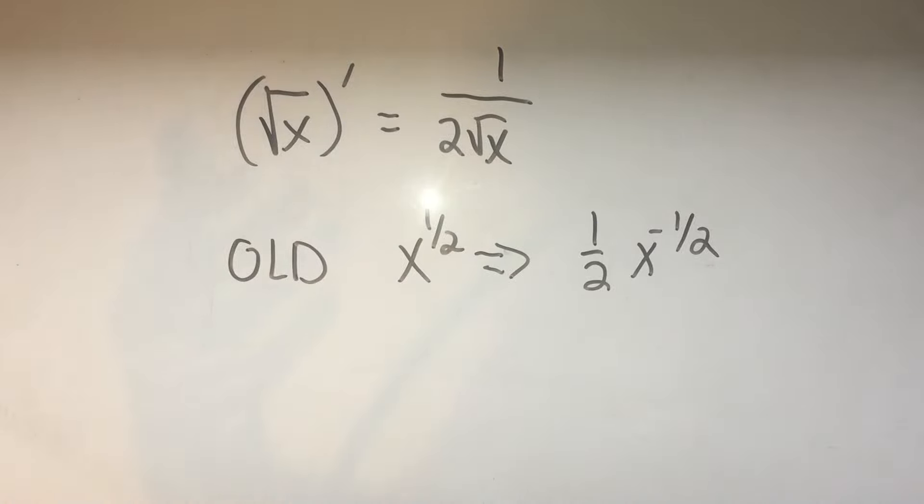So say it with me one more time. The derivative of a square root is one over two times the square root.